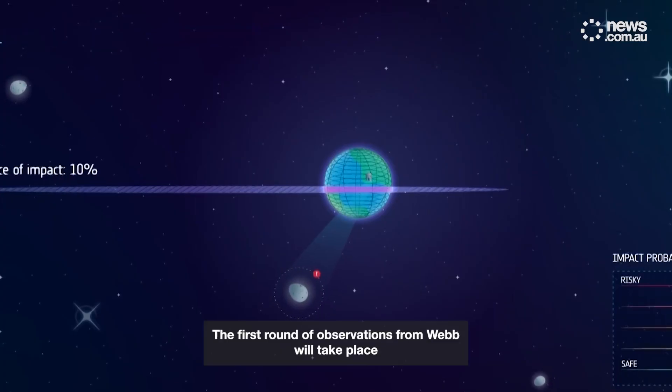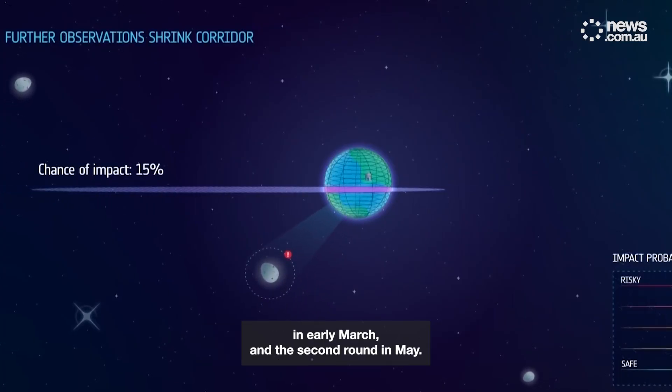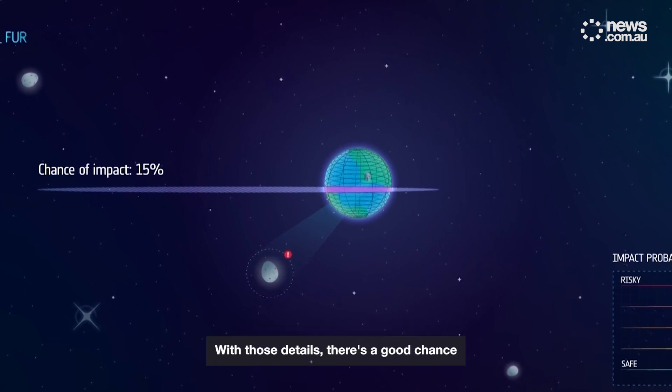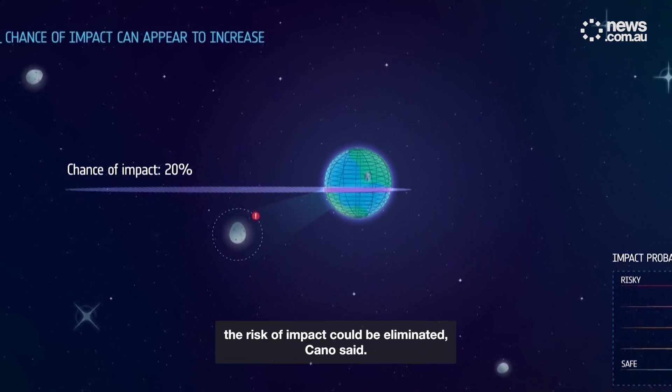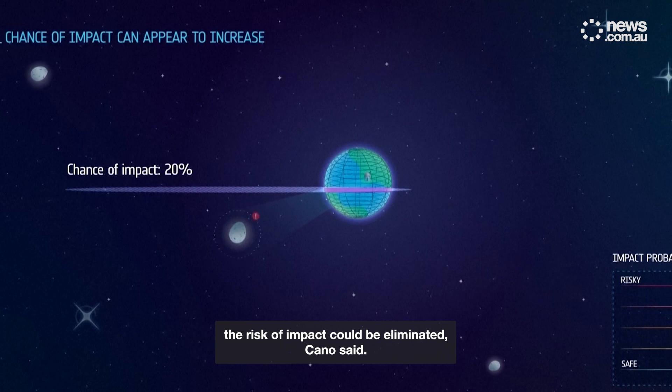The first round of observations from Webb will take place in early March, and the second round in May. With those details, there's a good chance the risk of impact could be eliminated, Cano said.